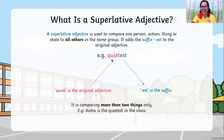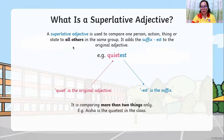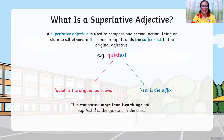For example: 'quietest.' When we say superlative, you are comparing the most within one group — meaning there are many people or things being compared. Superlative compares more than two things, whereas comparative compares only two.